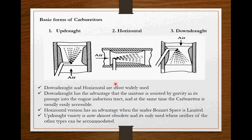Now out of these three forms, down-draught and horizontal are most widely used. Down-draught has an advantage that mixture is assisted by gravity in its passage into the engine induction tract and at the same time the carburetor is usually easily accessible. Whereas the advantage of horizontal version is, when the under-bonnet space is limited, this version is more suitable. Now the third one, up-draught variety is now almost obsolete and it's only used when neither of the other types can be accommodated.